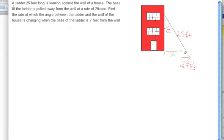Here's the question: a ladder 25 feet long is leaning against the wall of a house. The base of the ladder is being pulled away from the wall at 2 feet per second. Find the rate at which the angle between the ladder and the wall of the house is changing when the base of the ladder is 7 feet from the wall.